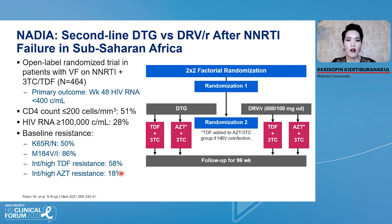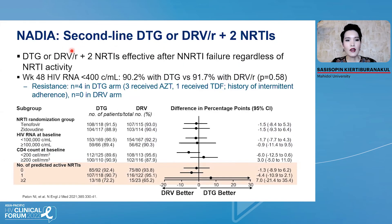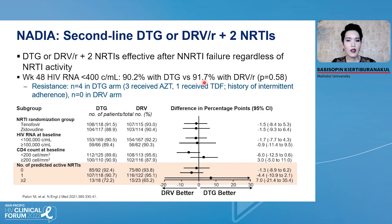18% had intermediate or high resistance to AZT. This is a 2x2 factorial randomization with two randomization steps. In the first step, patients were randomized to receive dolutegravir or darunavir/ritonavir. In the second randomization step, patients were randomized to receive either TDF plus 3TC or AZT plus 3TC. The study reported at week 48 that among dolutegravir or darunavir/ritonavir plus 2 NRTIs, both regimens were also effective after NRTI treatment failure regardless of NRTI activity.